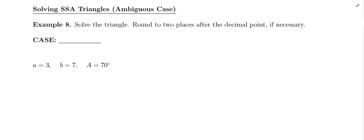With the ambiguous case, either zero triangles can result, one triangle, or two triangles. So we're going to go through the three scenarios.